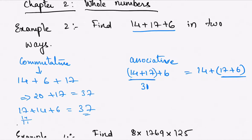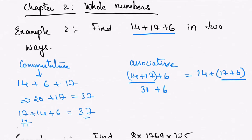Now here, 17 + 6 is 23, and 31 + 6 is 37. Similarly, if you add 14 + 23, you will get 37.